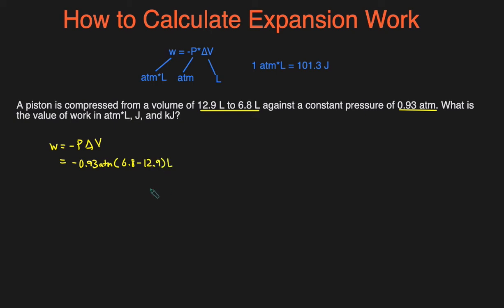We can plug that into the calculator: 6.8 minus 12.9, then multiply that by negative 0.93. And you'll get 5.6. Looking at sig figs, 5.7 atm·L as the value of work.